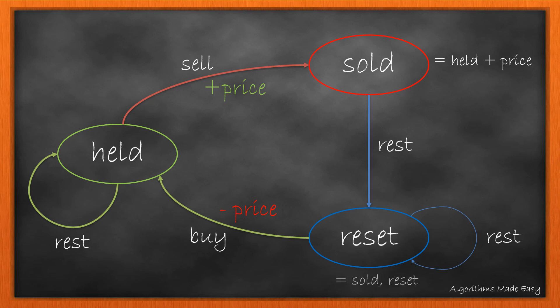As there are two possible ways to be in the reset state, there will be two values. First, the value of sold, and second, the reset value itself. The maximum of two will become our new value.